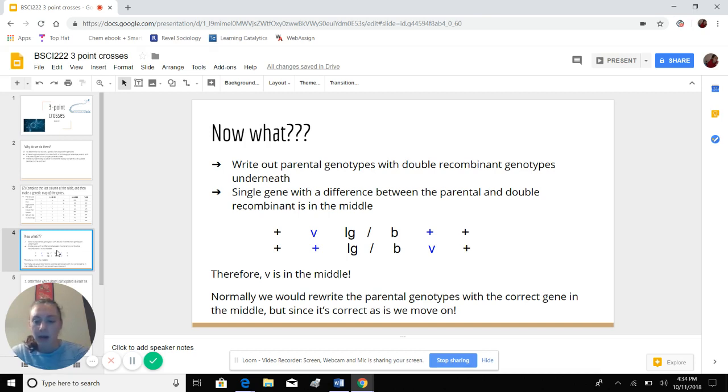So we see here that on the left side we have plus plus, V plus, and LGLG. So the difference there is the V plus. And then when we go to the right we have BB plus V and plus plus. So the difference there is the plus V. So we know that V is in the middle.